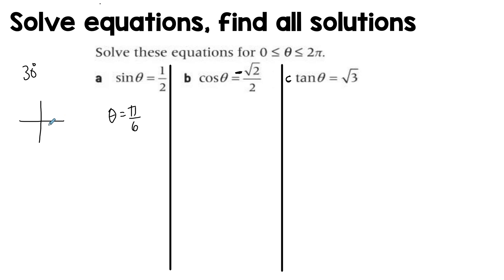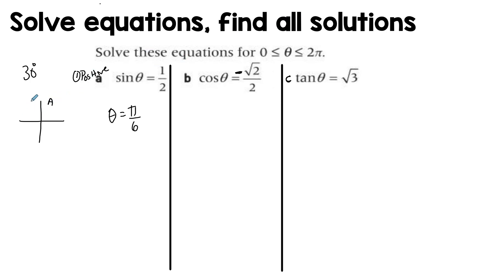Keep in mind your calculator will only give you one angle, and it will only give you the closest quadrant it's related to. So here sine θ is positive, which means that I need to find the solutions in the first quadrant and the second quadrant.